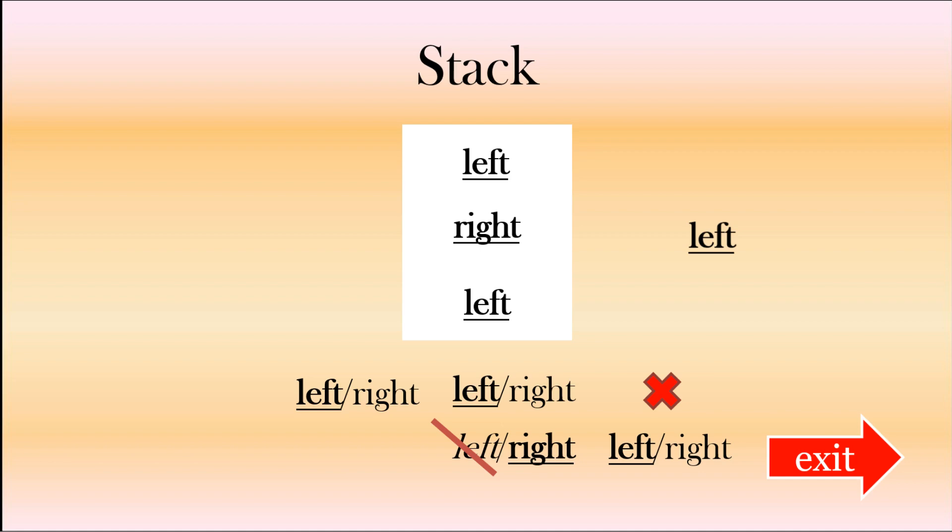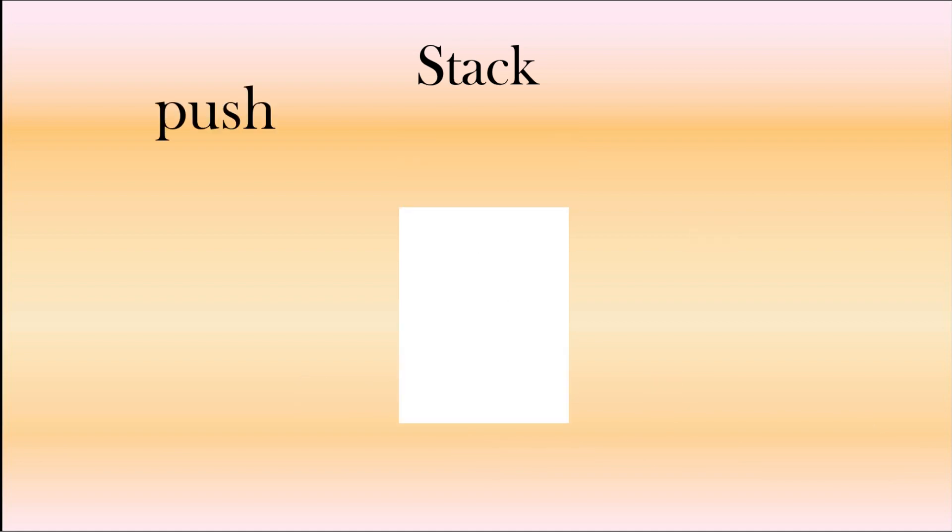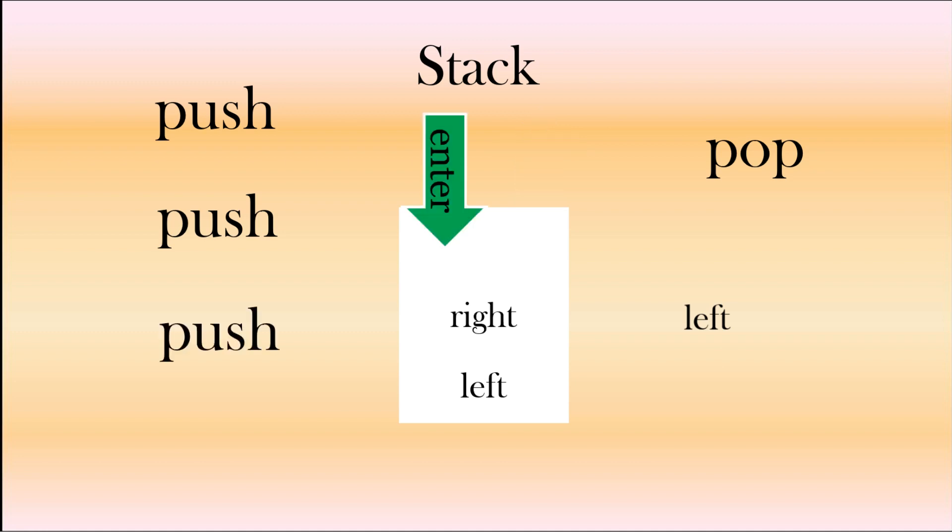So in terms of what we're doing just with the stack, first of all we push. So when we enter something it's called push, so we're going to push in left and we're going to push in left again. Then we're going to pop out left because it was wrong, so that's exiting, that's pop. And then we're going to push right, and then we're going to push left again, and then we have our correct solution: left, right, left. So we can push and pop into our stack and it works.